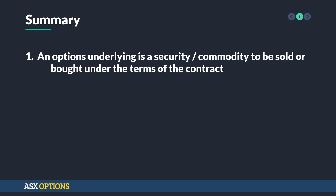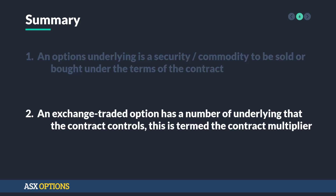In summary, an option's underlying is a security or commodity to be sold or bought under the terms of the contract. An exchange-traded option has a number of underlying that the contract controls — this is termed the contract multiplier. Thank you very much for listening to ASX Options. See you in the next tutorial.